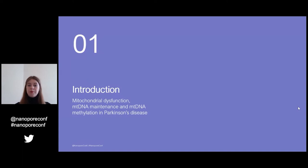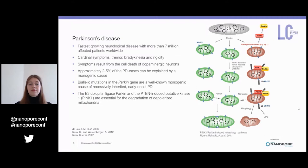In the beginning, I would like to give you some general information about Parkinson's disease and mitochondrial dysfunction. PD is the fastest growing neurological disease worldwide with more than seven million affected patients, and is characterized by the cardinal symptoms tremor, bradykinesia, and rigidity, but non-motor symptoms can also be present. These symptoms result from the loss of dopaminergic neurons in the brain.